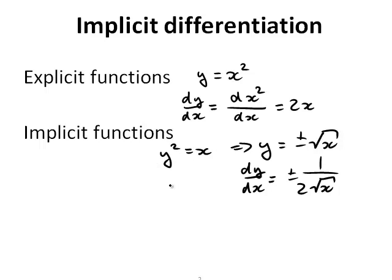So implicit differentiation works the following way. We have an equation given — in this case, y squared is equal to x. And if the left-hand side is equal to the right-hand side, then so are the derivatives of the left-hand side and the right-hand side. So if I now try to find d by dx of the left-hand side, that has to be the same as the derivative of the right-hand side.